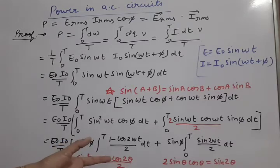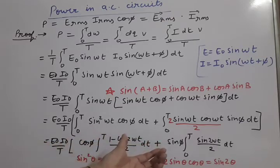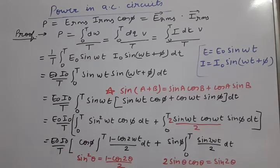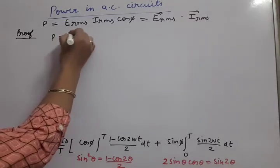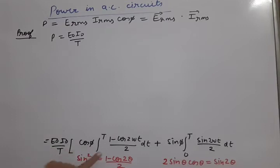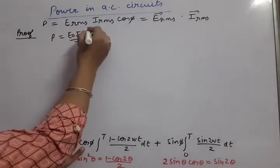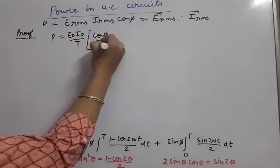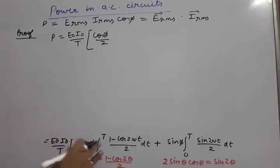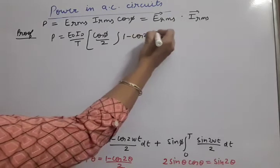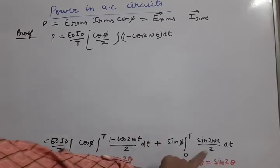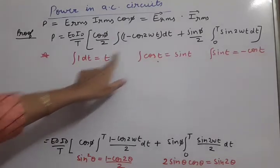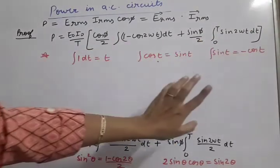Now we solve the simplified integrations. E₀I₀/T remains outside. The factor of 2 from the denominator is constant, so cos φ/2 is taken out, and we integrate only (1 − cos 2ωt). Similarly, sin φ/2 is taken out, and sin(2ωt) remains inside the integration.